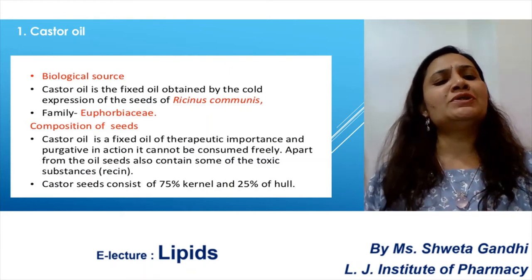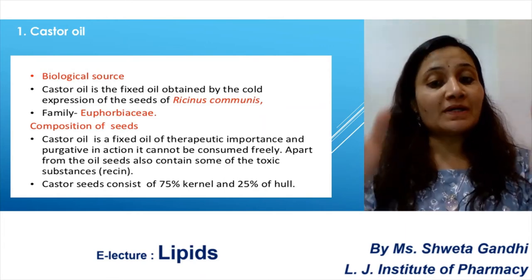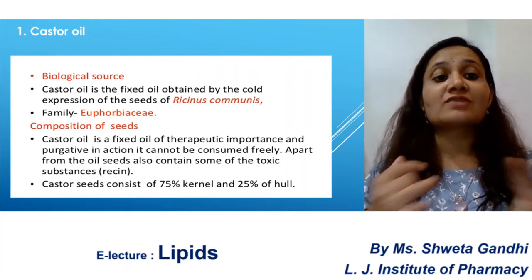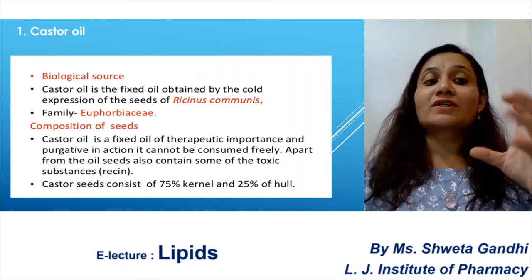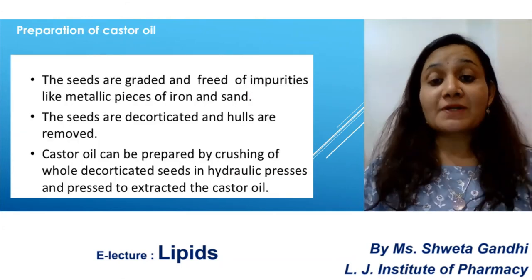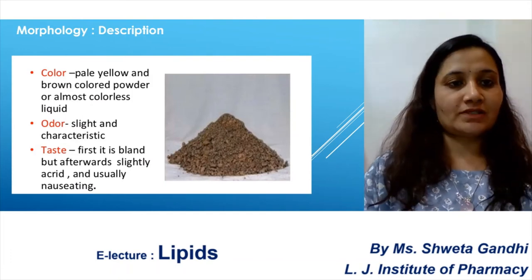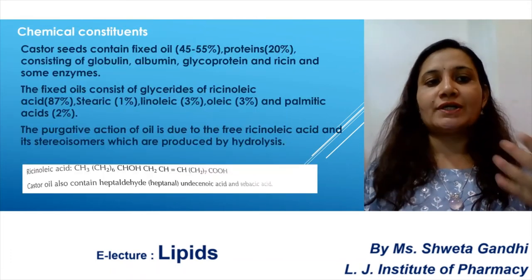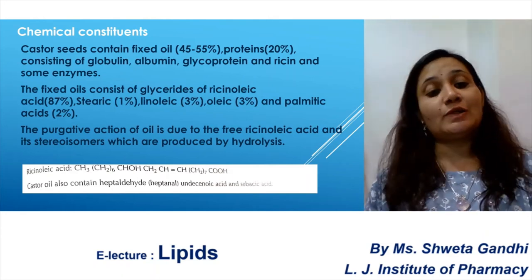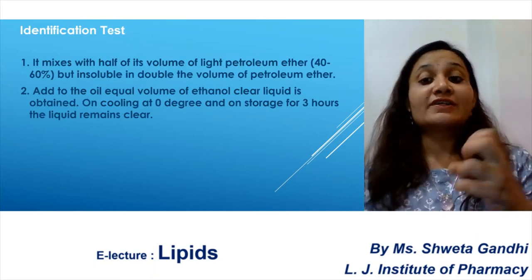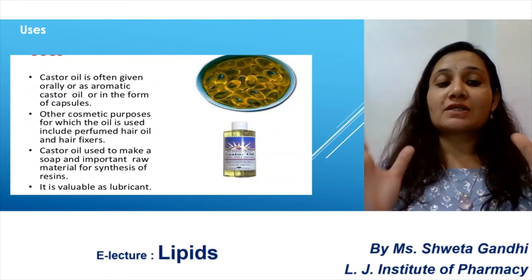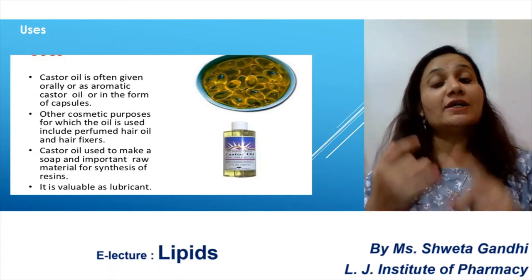Now, one by one we study the drugs. For castor oil, we study the biological source, composition of the seeds, how oil is obtained, preparation, morphology including physical description of color, odor, and taste, chemical constitution — how much fixed oil it contains, constituents such as linoleic and ricinoleic acid — different identification tests, and uses. The main use of castor oil is cosmetic purposes, pharmaceutical use, and as a raw material for the synthesis of various resins.